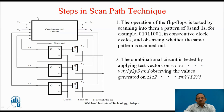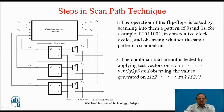The combinational circuit is tested by applying the test vectors W1, W2, ... Wn, as well as the present state variables y1, y2, y3, and by observing the values generated on Z1 to Zk and the next state variables Y1 to Y3.